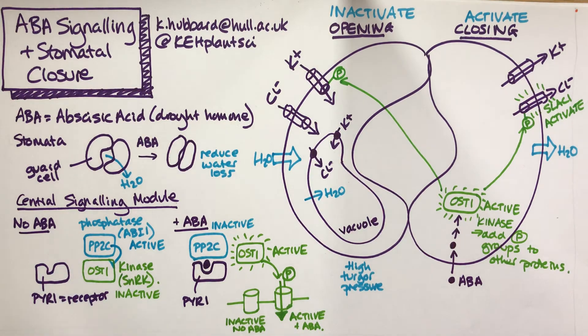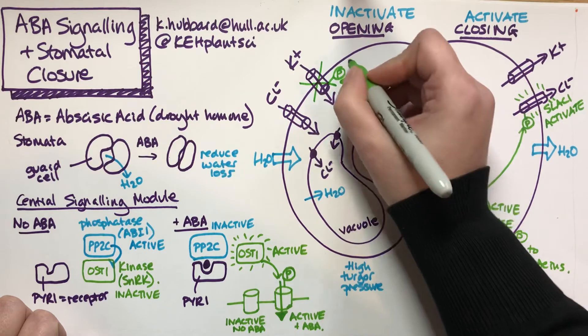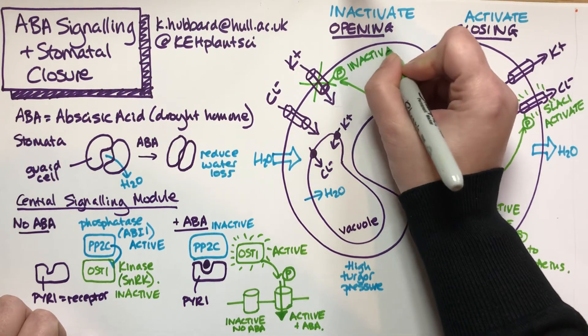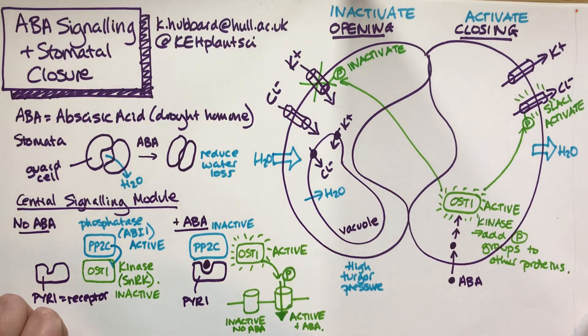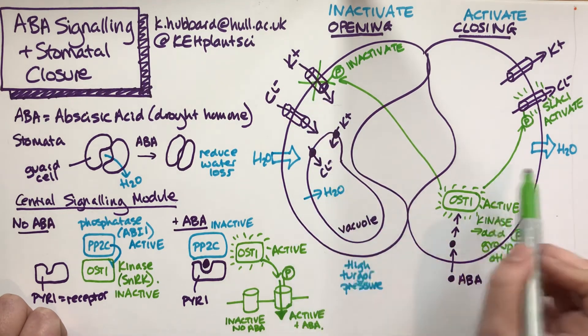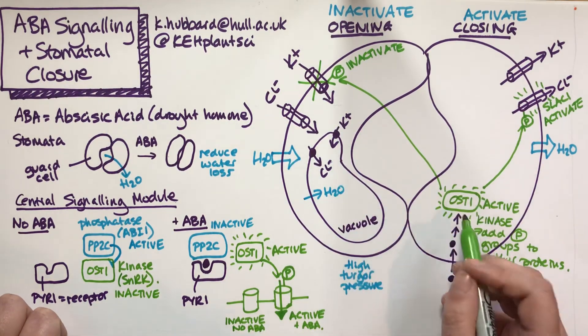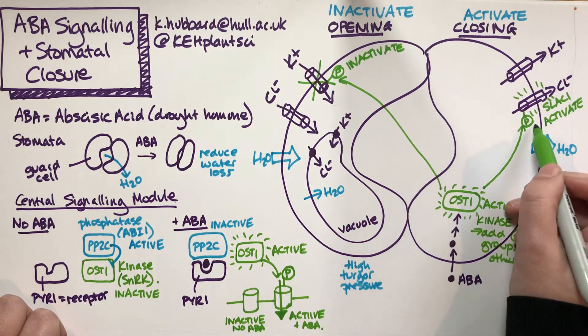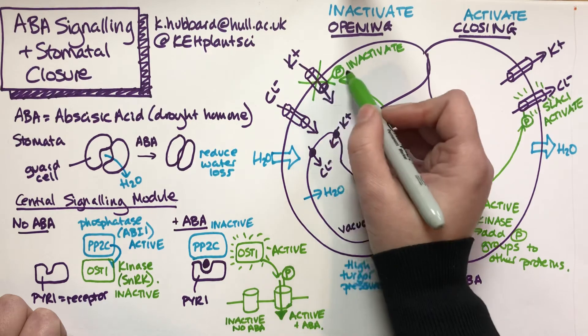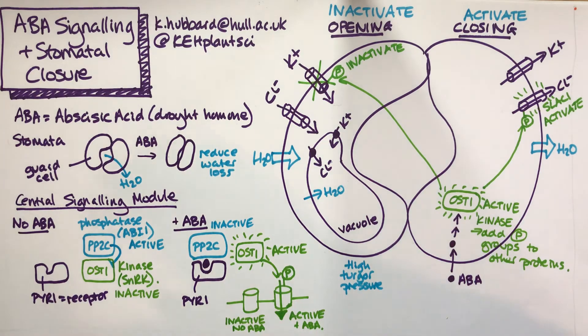OST1 can phosphorylate other things. It can go and phosphorylate this potassium inward channel. Phosphorylating that inward channel will inactivate it. Phosphorylation sometimes activates, sometimes represses. In this case, OST1 is repressing the potassium channel. Remember OST1 is in both cells; I've just separated out the process so we can see them. OST1 phosphorylated SLAC1 and activated it, and phosphorylated this potassium channel and inactivated it. We're starting to shift the balance from opening to closing.